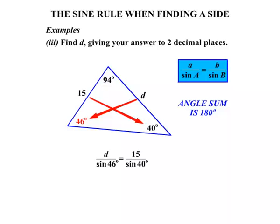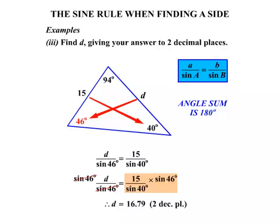Let's move on, rewriting it. Trying to find d - at the moment it's being divided by that sine 46, so let's multiply both sides by sine 46. We can see then on the left hand side they'll cancel each other out. We have the d now by itself. So therefore d equals - and using the calculator, 15 divided by sine 40, then multiply that by sine 46. We get 16.79. This time we've rounded it off to two decimal places.